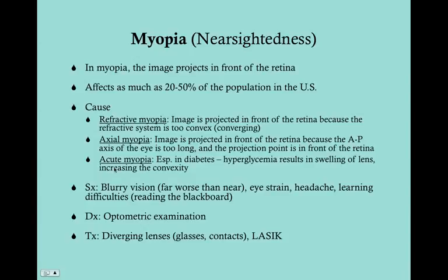Regardless of the cause - refractive or axial - myopia causes similar symptoms: blurry vision, and because it's nearsightedness, vision looking at things far away is worse than close up. These patients will move up close to objects to see them, and typically experience eye strain and headache. It can cause learning difficulties in preschool and grade school, usually difficulty reading the blackboard. Diagnosis is by optometric examination using the Snellen chart in a formal optometric setting.